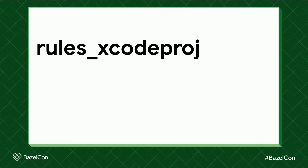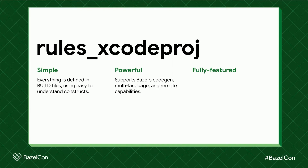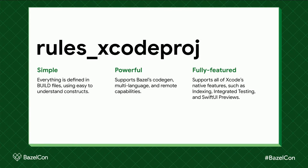Enter Rules Xcode Proj. Rules Xcode Proj is a simple, powerful, and fully featured Bazel-integrated Xcode Project Generator. It's simple because everything is defined in build files, the same as the rest of your workspace, using easy-to-understand constructs. It's powerful because it seamlessly supports Bazel's code gen, multi-language, and remote capabilities. And it's fully featured because it supports all of Xcode's native features, such as indexing, integrated testing, and SwiftUI previews.